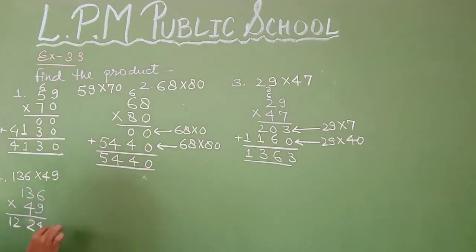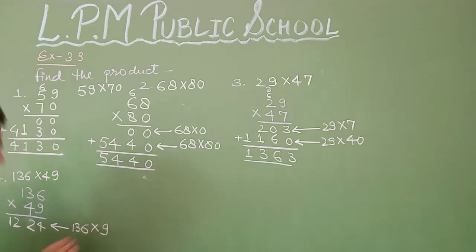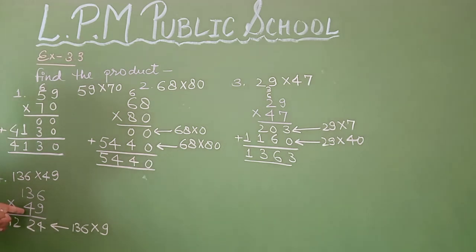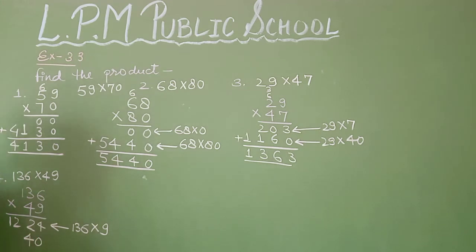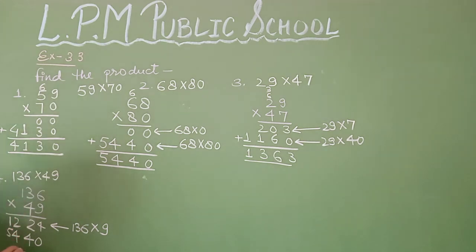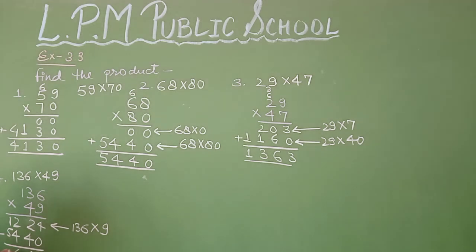Now multiply the tens: 4 × 6 = 24, write 4, carry 2. Then 4 × 3 = 12 plus 2 = 14, write 4, carry 1. Then 4 × 1 = 4 plus 1 = 5. Now add the products: 4, 0, 4 and 246, giving 5, 1, 6. That is 6,664 — that is 136 multiplied by 4 tens.